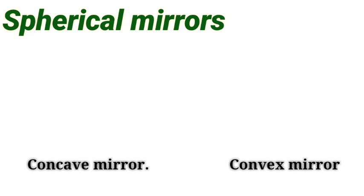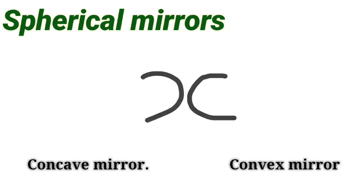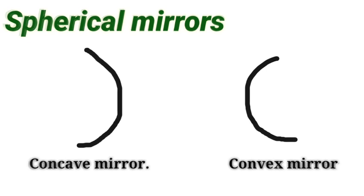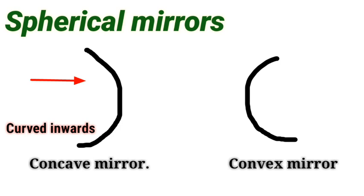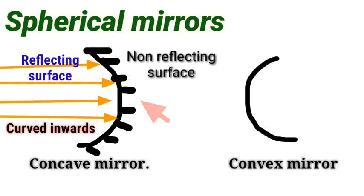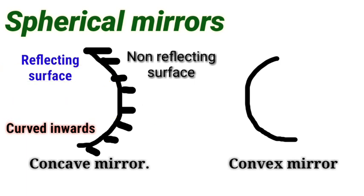We always have a confusion between the shapes of concave and convex. So if you look at this: I have an X shape. The first shape is concave, the next is convex. The first part is curved inwards - the curved inwards is concave, it is a concave mirror. The non-reflecting surface is at the back side of the mirror. Likewise, convex is curved outwards.